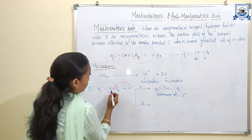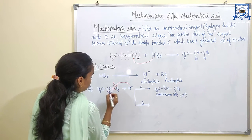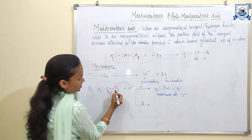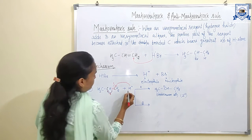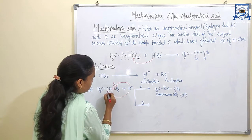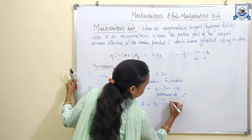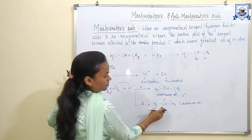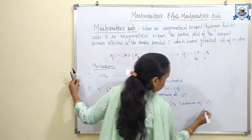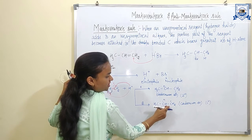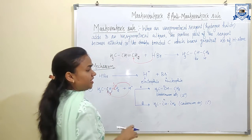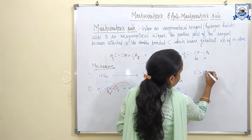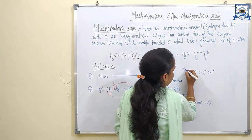Now let's see the other possibility. If the bond is broken in direction B, the electron will shift towards the other carbon and the positive charge will appear on the first carbon, so the proton attacks the second carbon. A 1° carbocation forms, because the carbon bearing the positive charge is attached to only one carbon atom. We already know the stability order: 3° carbocation is more stable than 2°, and 2° is more stable than 1°.